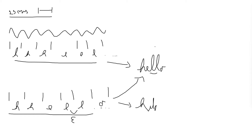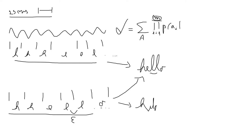So how do we compute the loss function? The loss L is the sum over all possible predictions that collapse to your transcription — let's call that set A. You compute the sum over this set of the product from t equals 1 to m of p(a_t | x_t), where m is the length of the input sequence, x_t is the input window, and a_t is the predicted character.